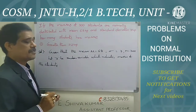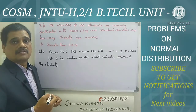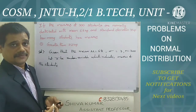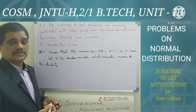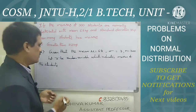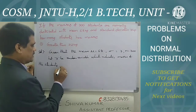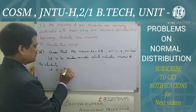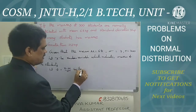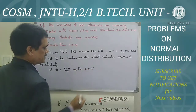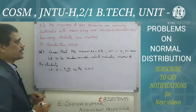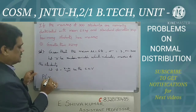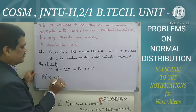All normal distribution problems can be solved by using the standard normal variate. First of all you have to convert the given problem into the standard normal variate. Z equals x minus mu divided by sigma is the standard normal variate. Now I am going to find the probability of X greater than 72 kg.